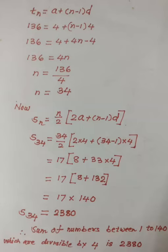Therefore, the sum of natural numbers between 1 and 140 which are divisible by 4 is 2380. Thank you.